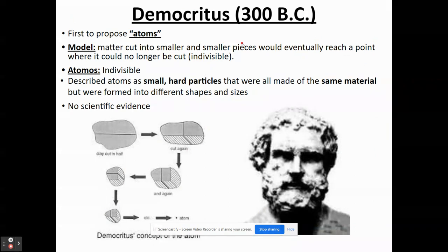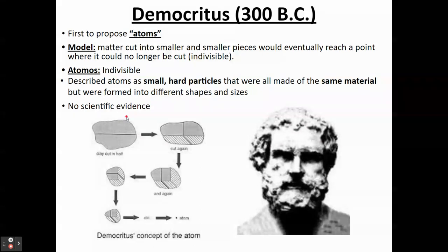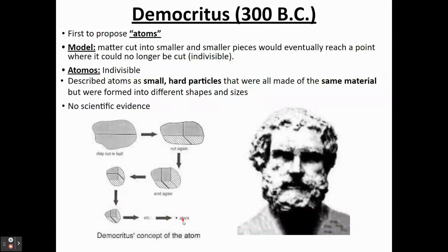Some early ideas of the atom came from Democritus and other philosophers around 300 BC. These weren't based in science — that was their limitation; there was no scientific evidence, it was just ideas. The idea behind this model is that if you take a substance and cut it into smaller and smaller pieces and keep cutting it, you'll get to a point where you can't divide it anymore, and that point is what Democritus proposed to call 'atomos,' or indivisible — the atom.